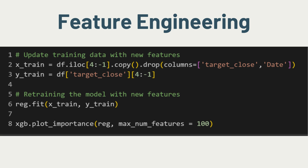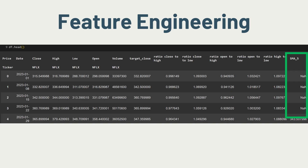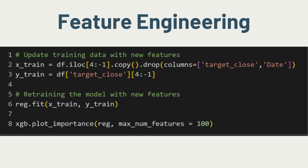We are now done with feature engineering. We will retrain the model with the additional new features. Same as before, we will train on all the dates except the latest date and save it for model prediction. One difference is that I have deliberately excluded the first four rows from the training dataset. The reason is that with the inclusion of the five-period simple moving average, there are no computed values for the first four rows — they are NaN. As they are not helpful in training the model and might skew the results, I have excluded them.